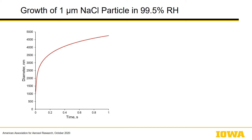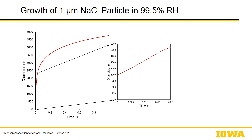Here is some output of the model, showing the extremely fast growth initially for a one micron sodium chloride particle, after which it starts tapering off. Zeroing in on the growth phase, you can see it is practically linear during the deliquescing growth period, where the film is retained at saturation and held constant until the particle is completely dissolved.